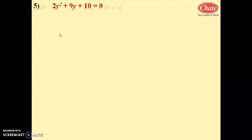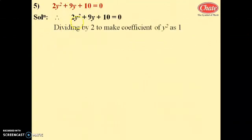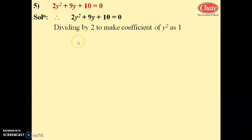Number 5: 2y² + 9y + 10 = 0. Dividing by 2 to make the coefficient of y² equal to 1, we get y² + 9/2·y + 5 = 0.